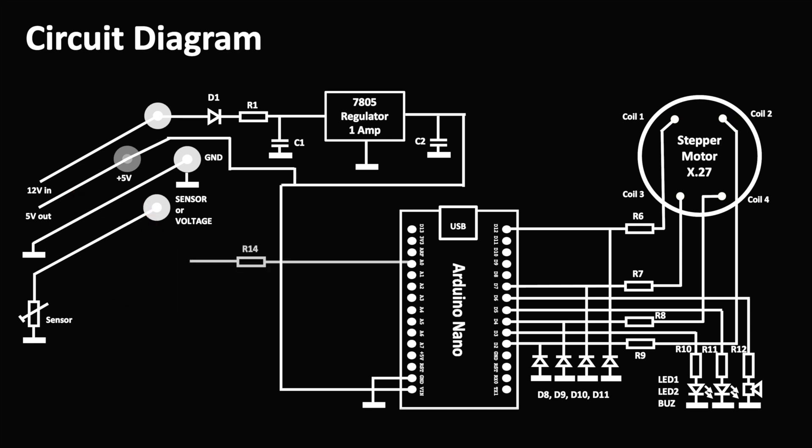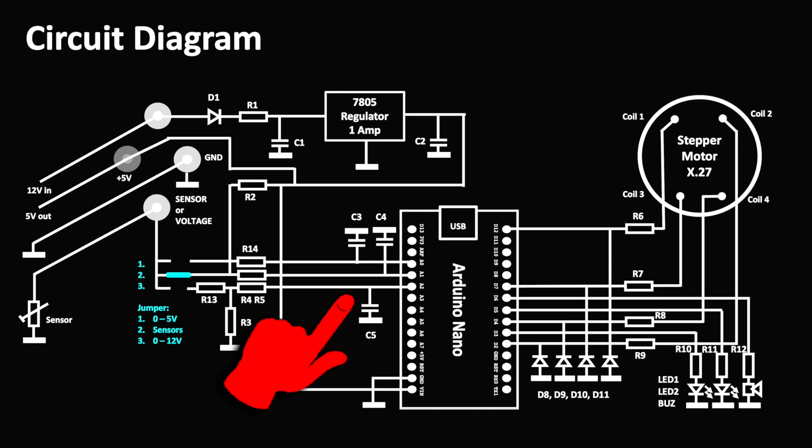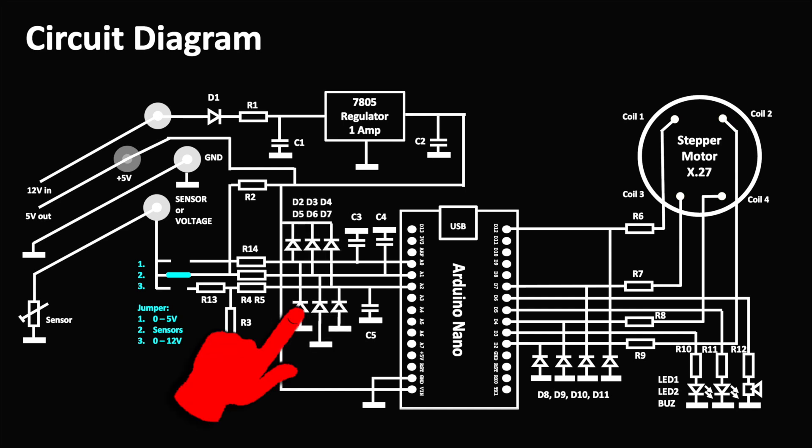Selected by a jumper, we are using three analog inputs of the Arduino Nano board. Three series resistors together with the ceramic capacitors are blocking interference. Overvoltage and incorrect polarization protection is realized using six diodes.